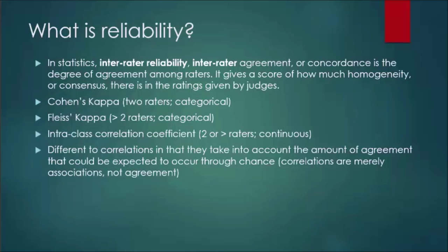There are three primary statistics that are used for reliability calculations. Firstly, there is Cohen's Kappa, which has two raters and uses categorical data. For two or more raters using categorical data, you use Fleiss's Kappa, but I'm not going to be going over Fleiss's Kappa — it's going to be limited to just two raters, whether it's intra or inter-rater. And then lastly, there is the intraclass correlation coefficient, or the ICC, which is two or more raters using continuous data.